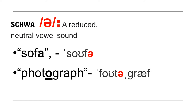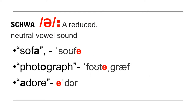The first syllable is the stressed syllable. So if it is a stressed syllable, we cannot use the schwa sound. So we say 'photograph.' Another example is 'adore' — adore. The stressed syllable in this case is the second syllable, so we use the schwa sound for the first syllable.